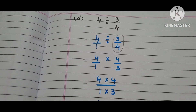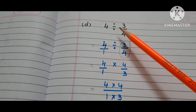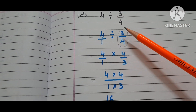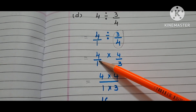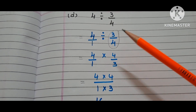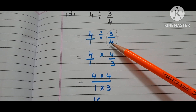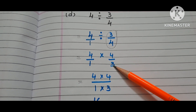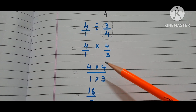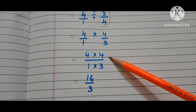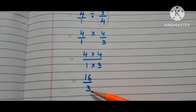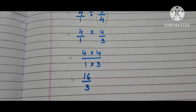Now let us move to the D bit. The question is 4 divided by 3/4. 4 means 4/1 divided by 3/4. First, copy down the first fraction 4/1. Instead of the division symbol, write the multiplication symbol and write the reciprocal of 3/4, that is 4/3. This is nothing but 4 times 4 by 1 times 3 — 16 by 3. So, the answer is 16/3.